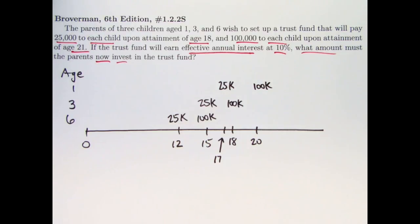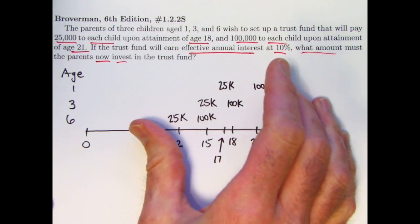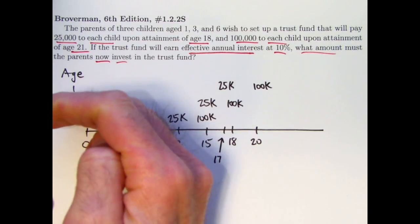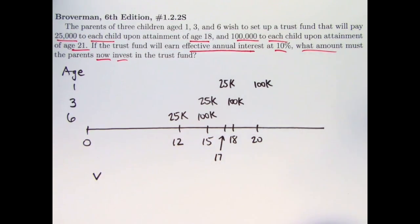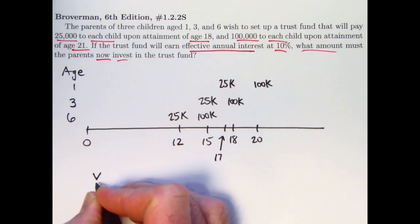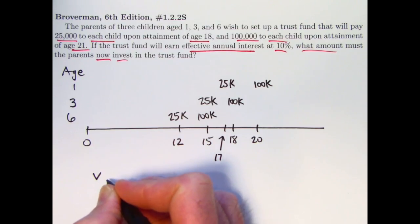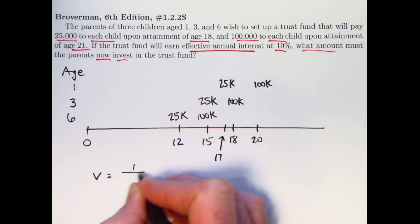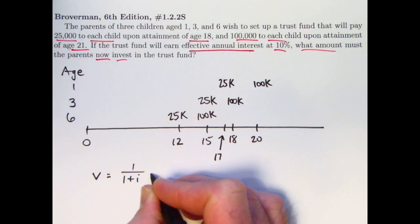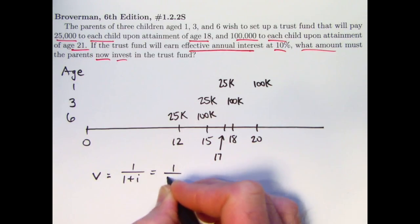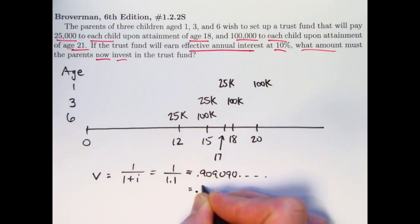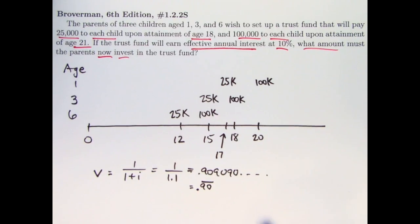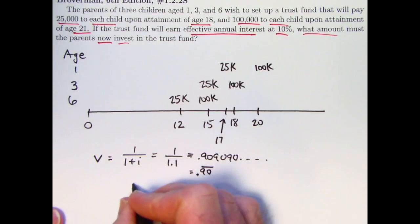So how do you solve this problem? We want to find the present value of all these future payments. We want to imagine taking these payments and pulling them back in time, yanking them back in time to the present, time zero. To do that, we need to multiply by powers of what's called the present value discount factor. Some books make it look like the Greek letter nu, some books make it look like the letter V. V is simpler. I'm just going to call it V. It's 1 over 1 plus the interest rate.